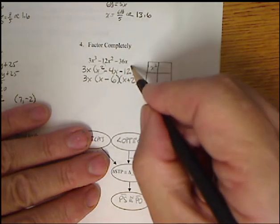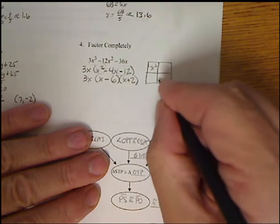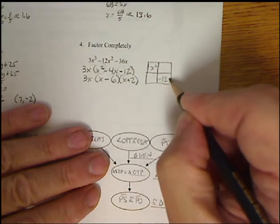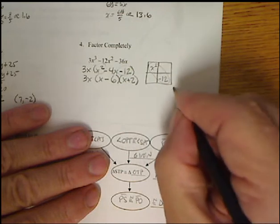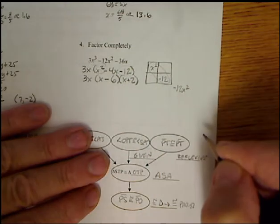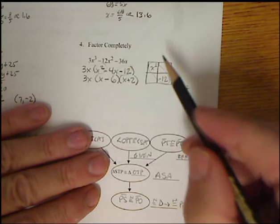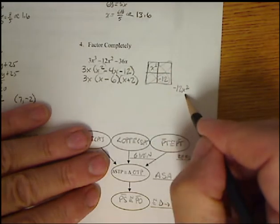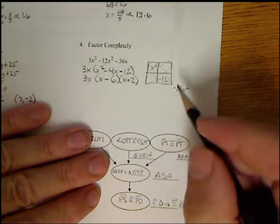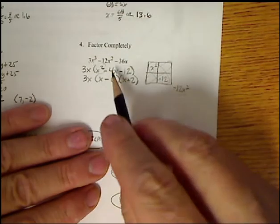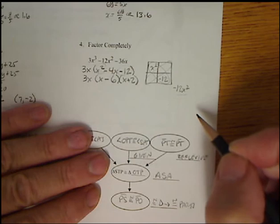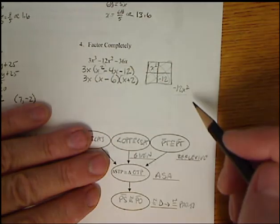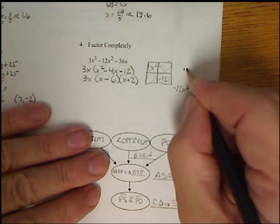You take the term that's here, which is x squared, and you take the term that's at the end, goes into this box. Then, these two multiplied together give me negative 12x squared. So that means these two multiplied together have to equal negative 12x squared. But I want them to multiply to give me negative 12x squared, but add to give me negative 4x.